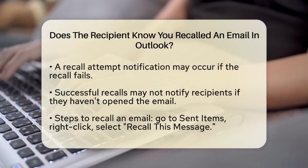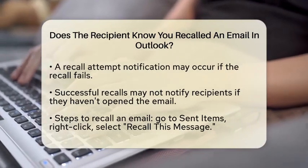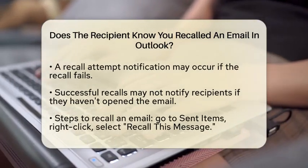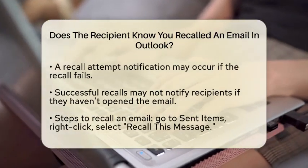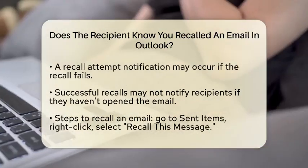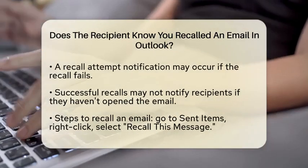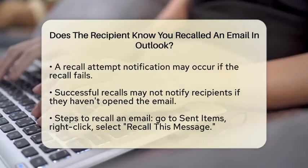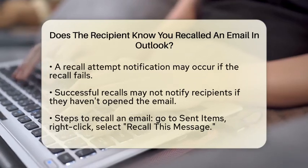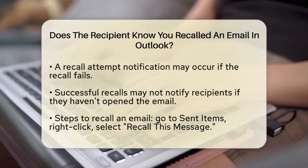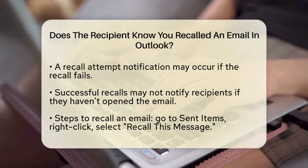So, how do you recall an email in Outlook? First, you need to go to your Sent Items folder. Find the email you want to recall, right-click on it, and select Recall this message.